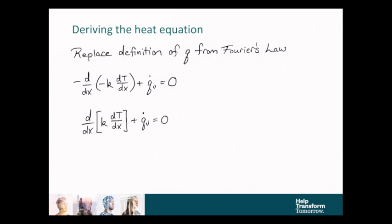There are two limiting cases, though. If k is constant, you can pull it outside of the brackets. Not a problem. In a lot of examples also, we're not going to have generation. And so the equation, the heat equation, collapses onto this very simplified form, which is known as the Laplace equation.